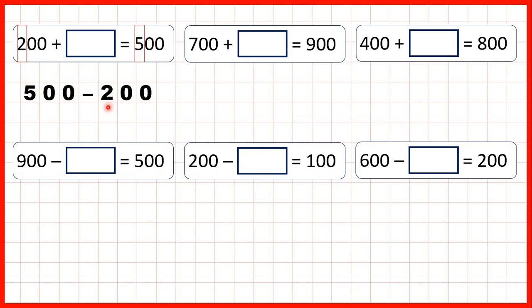500 minus 200 is 300, and that makes sense because looking at our hundreds digits, 2 plus 3 is 5.